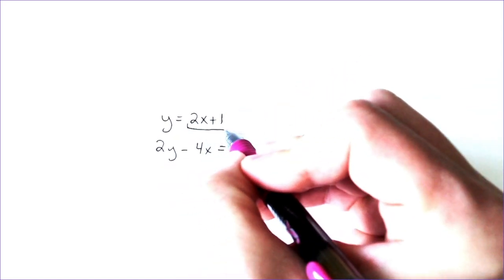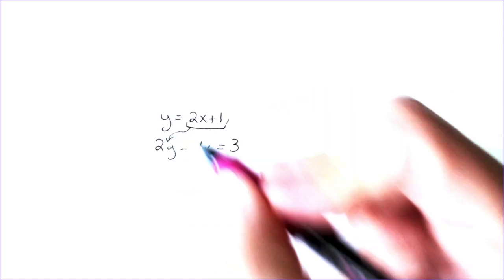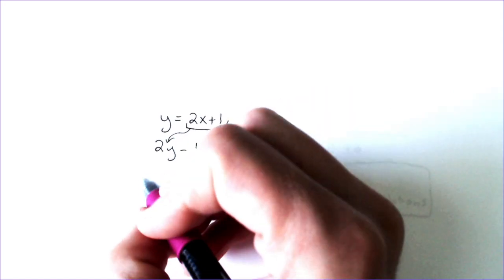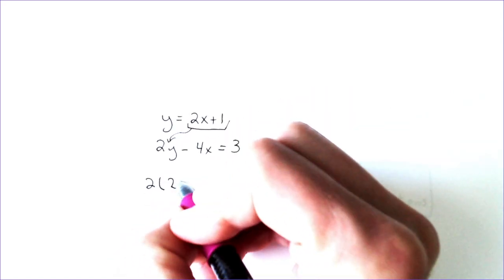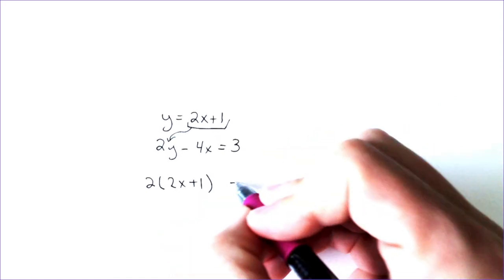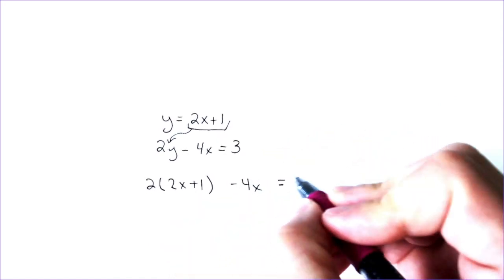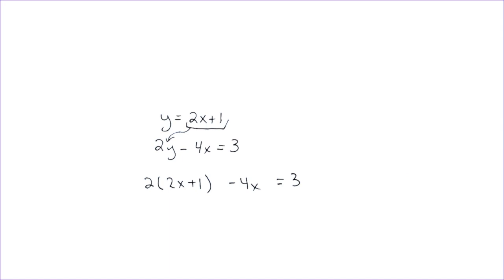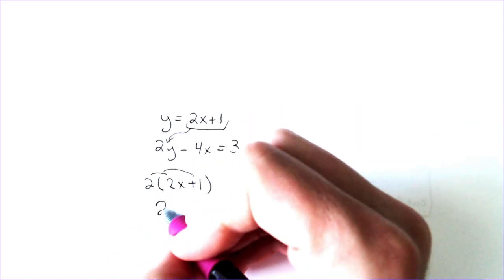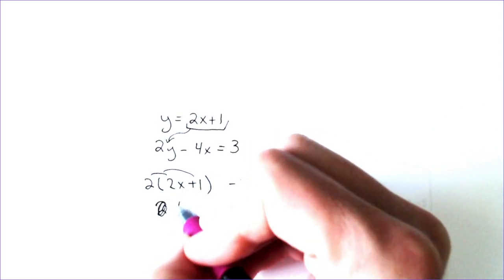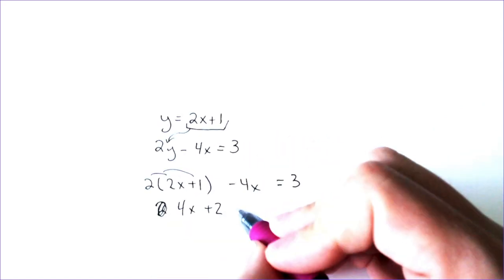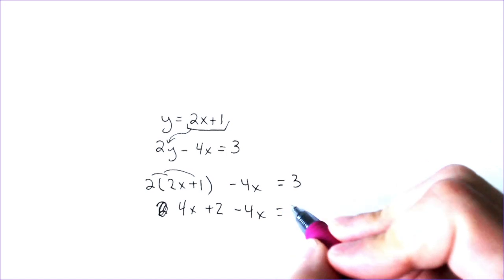I'm going to take that and substitute it in for y, and we get 2 times (2x plus 1) minus 4x equals 3. We have to distribute the two. We get 2 times 2 is 4x plus 2 minus 4x equals 3.